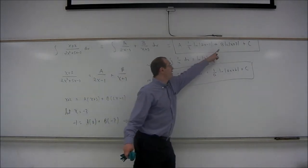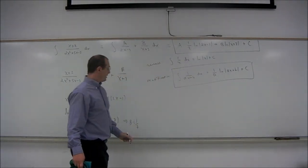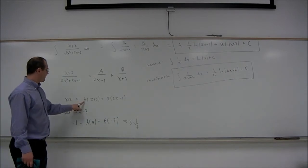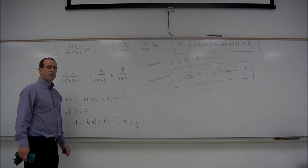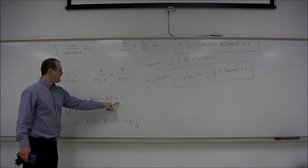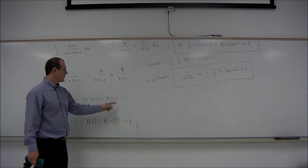So that's going to go in here, in our final answer. Let's figure out a first. To figure out a, we would like maybe to make the quantity in the parentheses equal to 0, the quantity that's next to b, so let x equal 1 half.